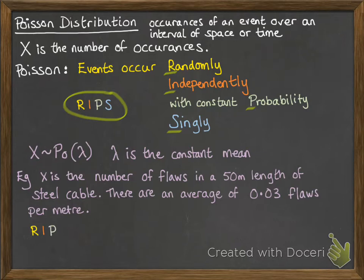The probability is constant, there's always 0.03 flaws per meter. And they happen singly, so you can't have two flaws at the same point. So it follows RIPS, therefore it follows a Poisson distribution.